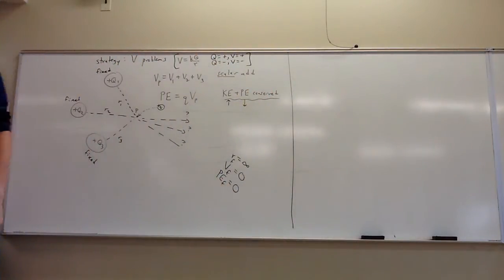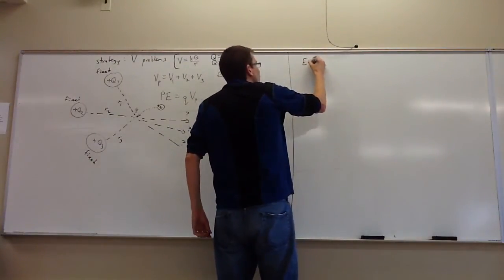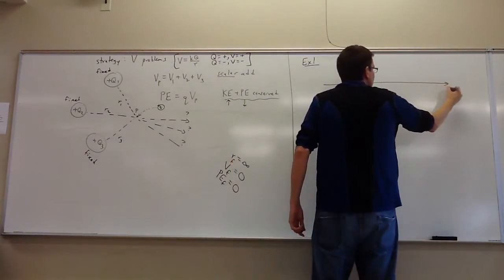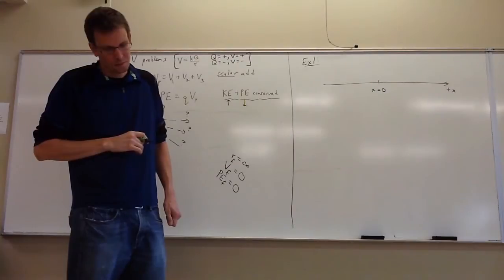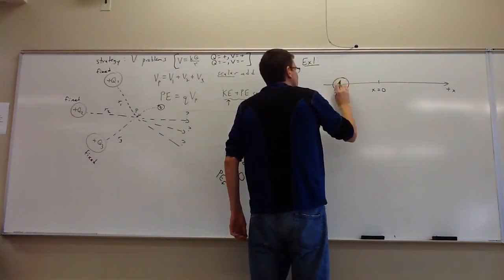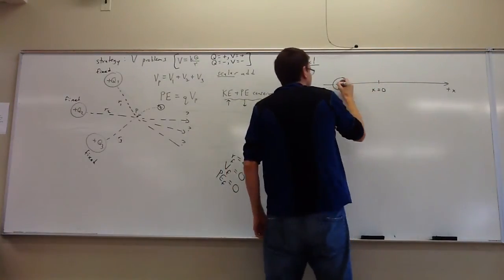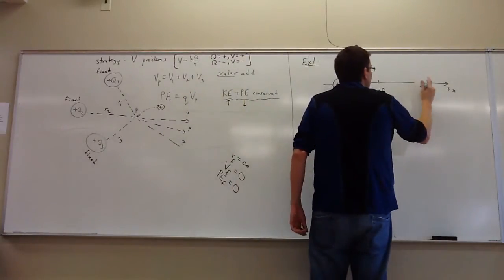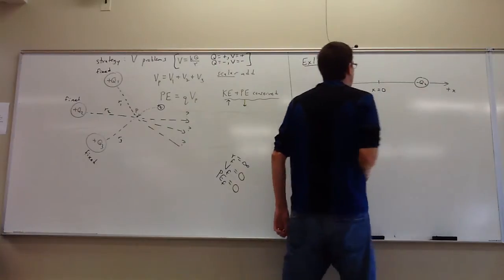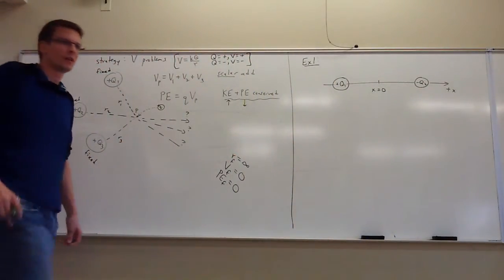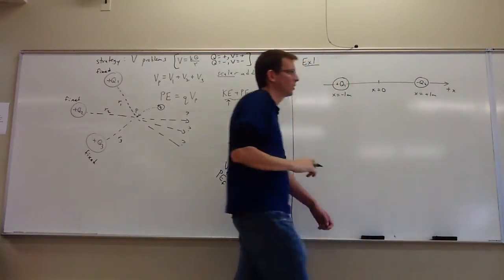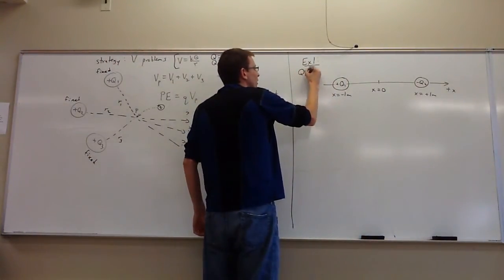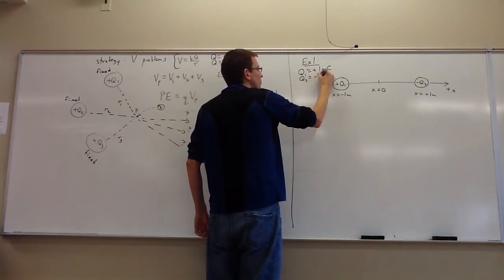Here's an example. I have an x-axis, x equals zero, and I'll put a couple of charges in. That's plus Q1 and minus Q2. They're located at x equals minus one and x equals plus one — symmetric around the origin — and they're also equal in magnitude. Q1 is plus one nanocoulomb and Q2 is minus one nanocoulomb.